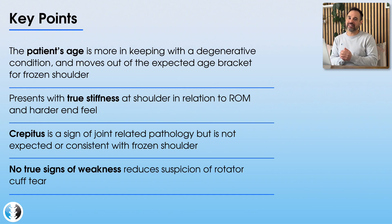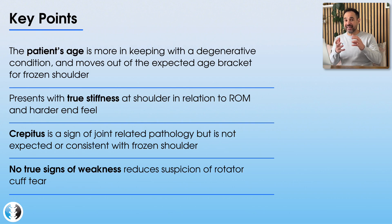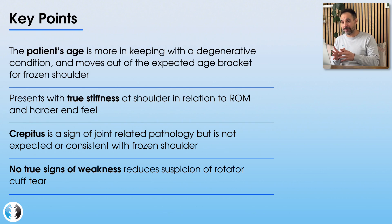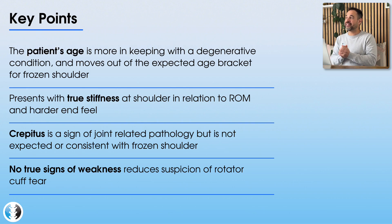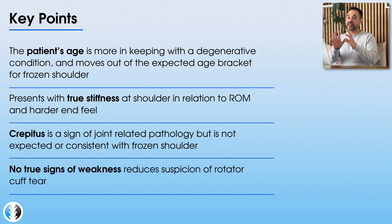Instead, this individual is more likely to have osteoarthritis. Of the two main conditions causing shoulder stiffness — frozen shoulder and osteoarthritis — we've ruled out frozen shoulder. The other classic sign here is crepitus: that crunching or grinding sensation at the shoulder. This is not expected with frozen shoulder, but is a potential sign of osteoarthritis due to breakdown of the articular surfaces. The true stiffness with a firm end feel is also in keeping with a joint-related problem such as shoulder osteoarthritis.